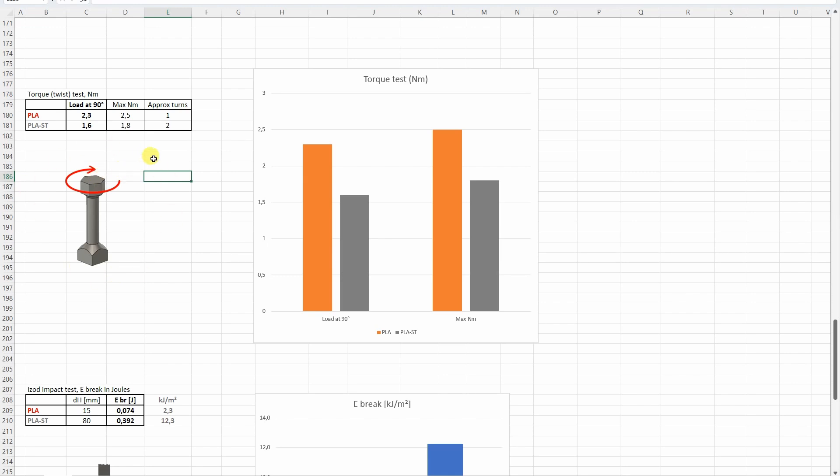Actually here I'm planning to do a new torque test, similar to the new bending test. Instead of rotating and measuring the load at 90 degrees and maximal load, I would like to place a constant, let's say one Newton meter load on the test object and measure its deformation, the rotation angle after one second, 30 seconds, and 60 seconds. What is your opinion about that? Should I stay with this test as it is now, or would you like to see that kind of test where I place some known load and measure the deformation?